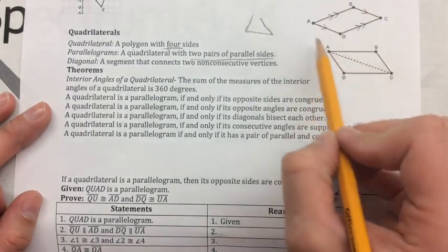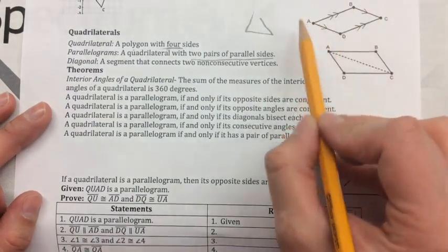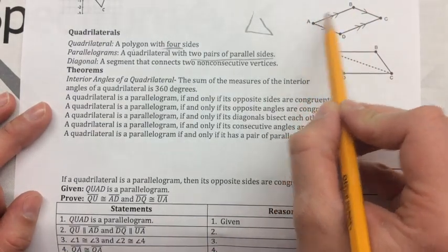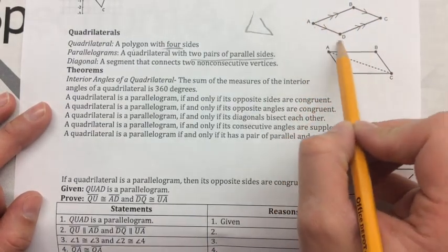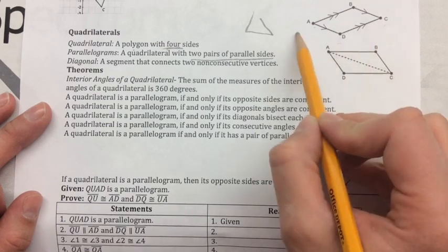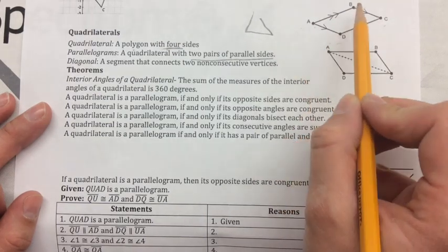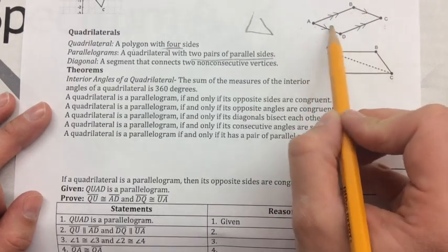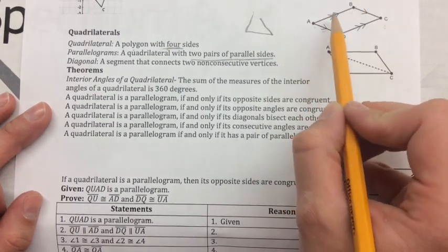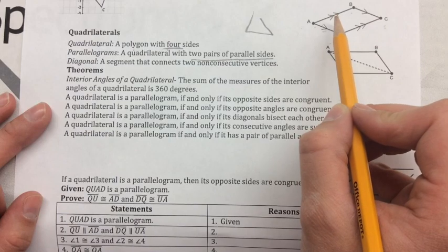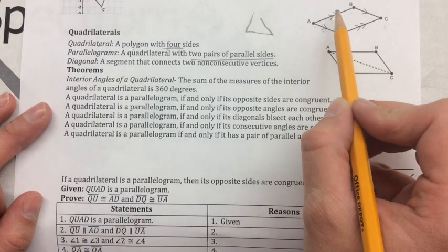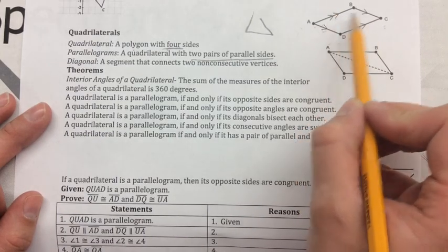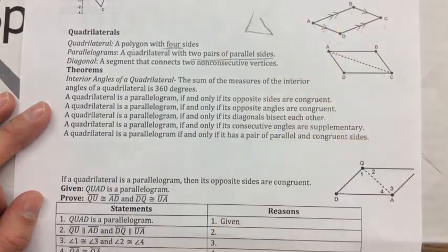This figure up here is a parallelogram because AB is parallel to DC, and AD is parallel to BC. Remember that the arrows that match mean that they're parallel. So the sides with two arrows are parallel to each other, and the sides with one arrow are parallel to each other.